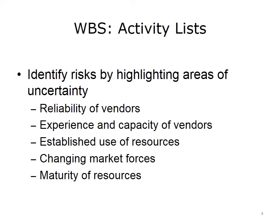You will be able to identify many project risks simply by examining these work packages and activity lists to uncover areas of uncertainty. As an example, an activity list may indicate that a specific software package will be integrated into the evolving system. What is the risk of using that software in the intended way? Is this a mature product? Is there a large installed base of users? Is the product being used in ways similar to how it will be used on your project? Have you heard that the vendor will be acquired by a larger company, and if so, how will that affect your project?